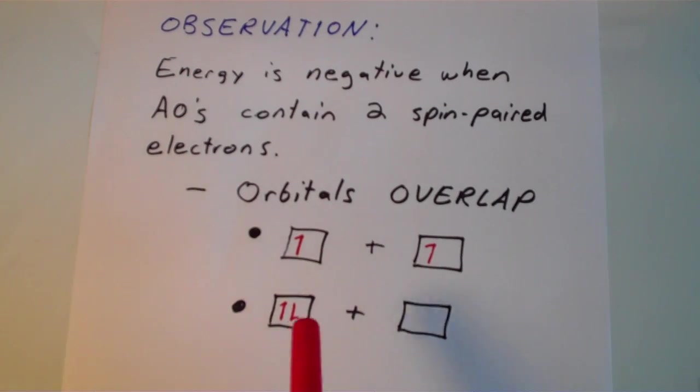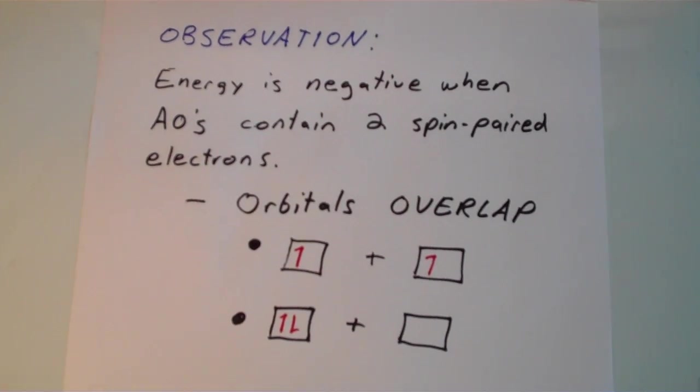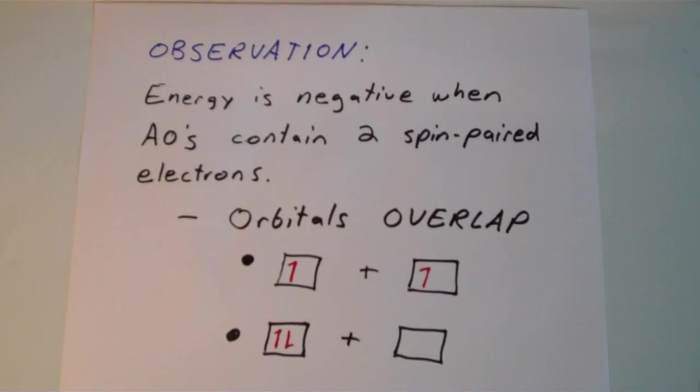And there's two ways that orbitals can overlap to give you two spin-paired electrons. One of the ways, the more common of the two, is when two half-filled orbitals combine. And the other less common situation is when a full orbital, a full atomic orbital, combines with an empty atomic orbital.